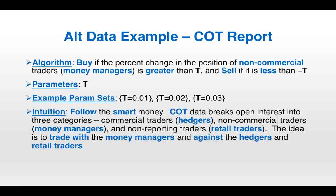We're going to look at an example using the COT report — the Commitment of Traders report, released weekly by the CFTC. It breaks traders into three categories: commercial traders (hedgers), non-commercial traders (which tend to be money managers), and non-reporting traders (which tend to be retail traders who don't have to report because they're too small). This strategy will buy if the percent change in the position of non-commercial traders — the money managers — is greater than some threshold T, and sell if it is less than negative T. Just one parameter, T. The idea is simple: follow the smart money. We theorize that money managers are more informed than hedgers and retail traders, so we trade with the money managers and against the hedgers and retail traders.